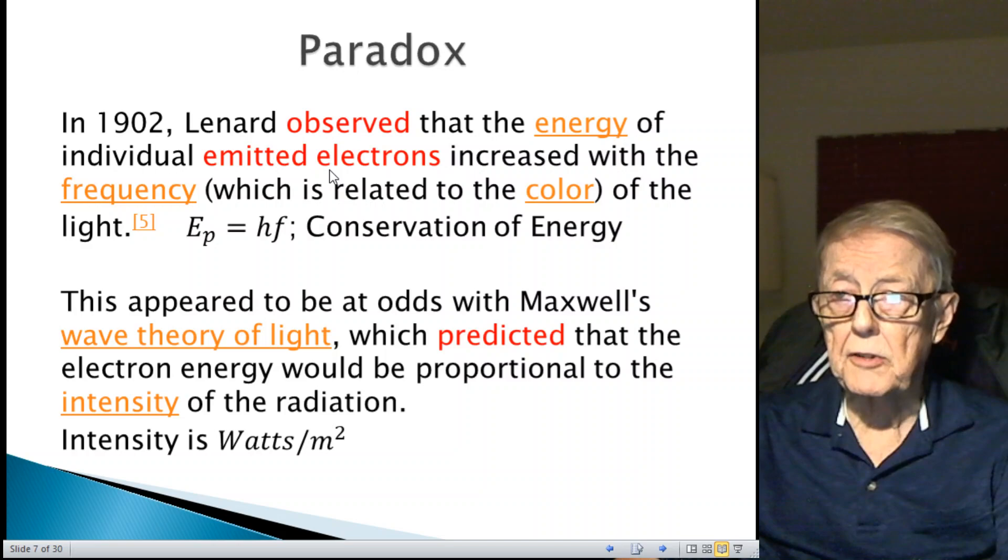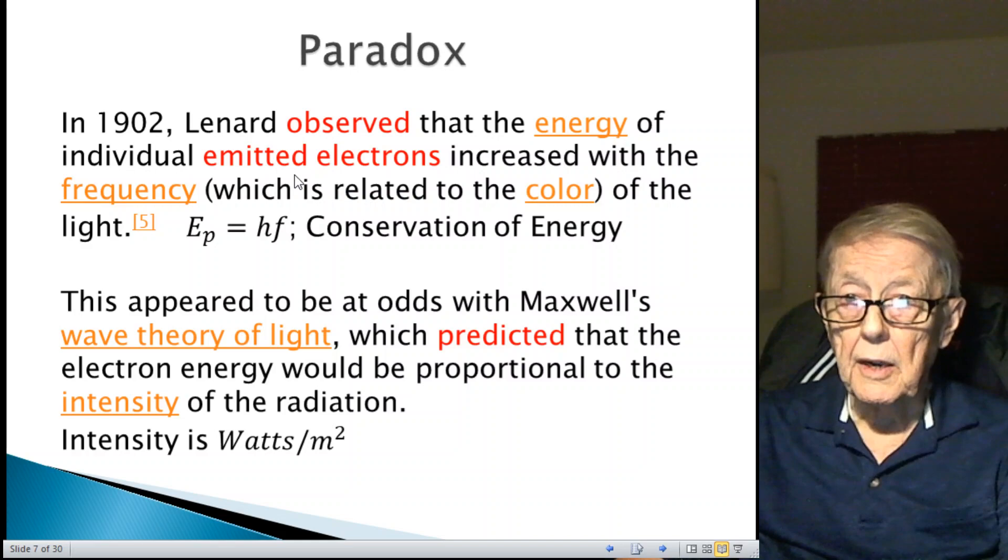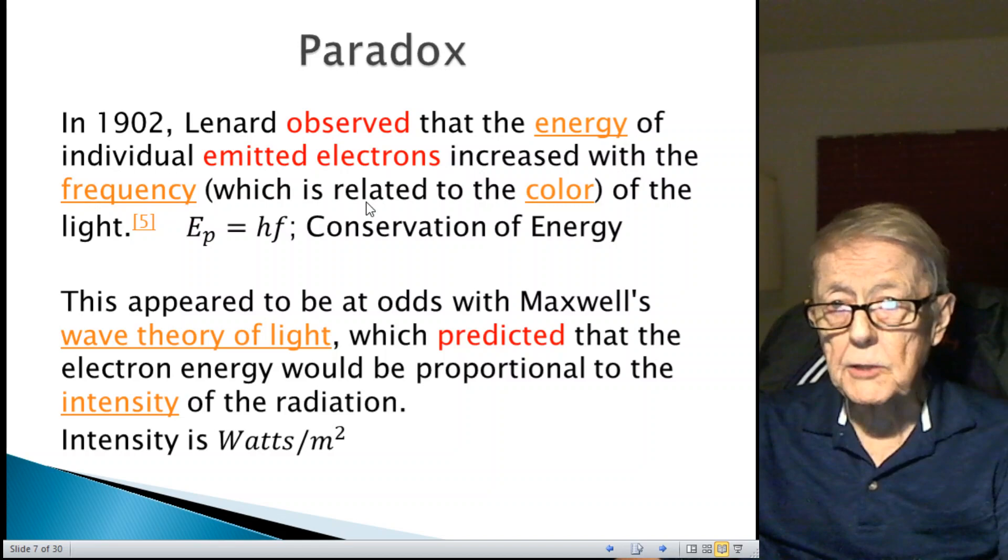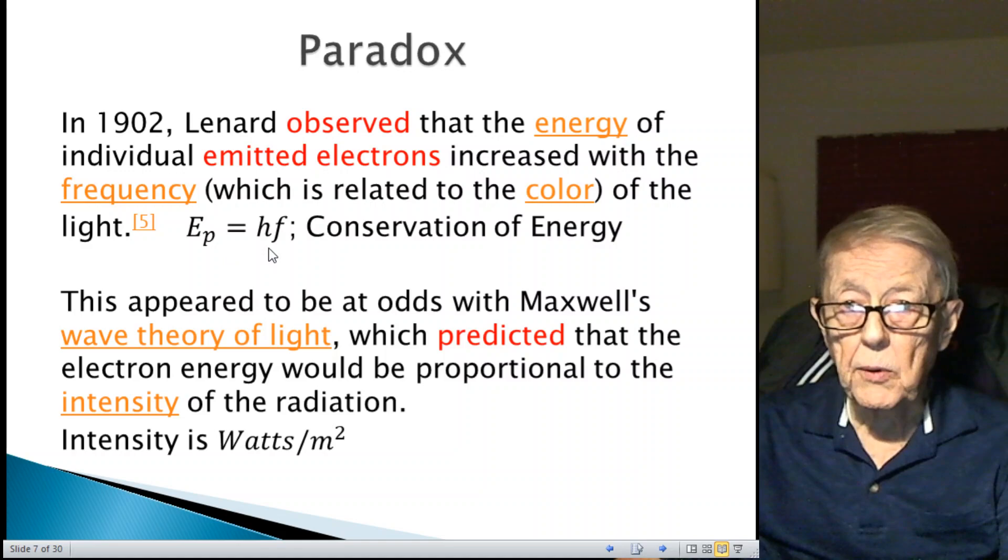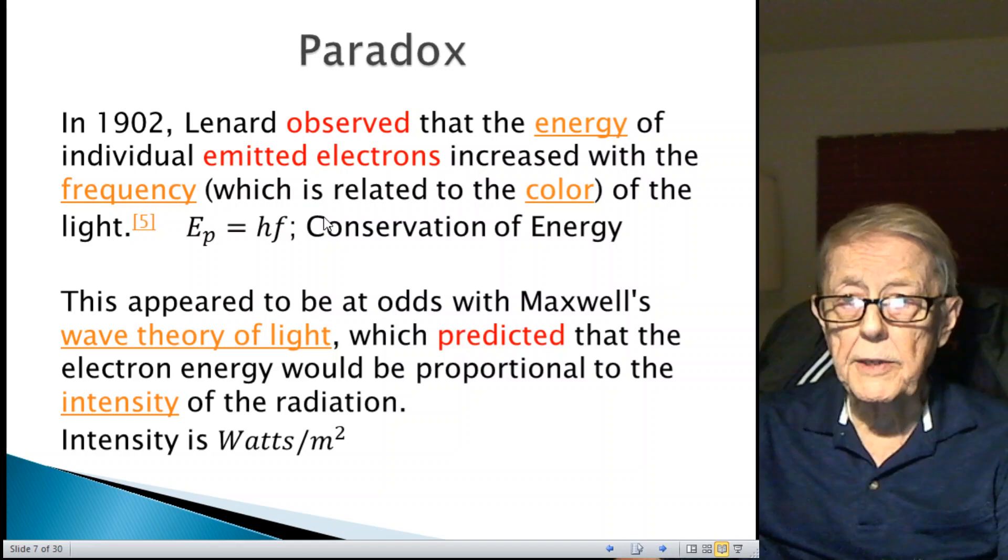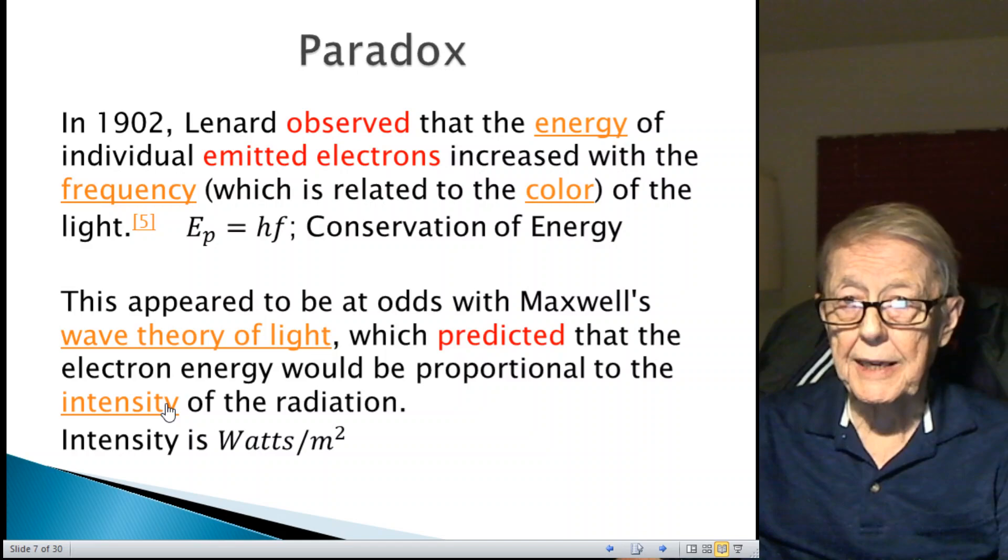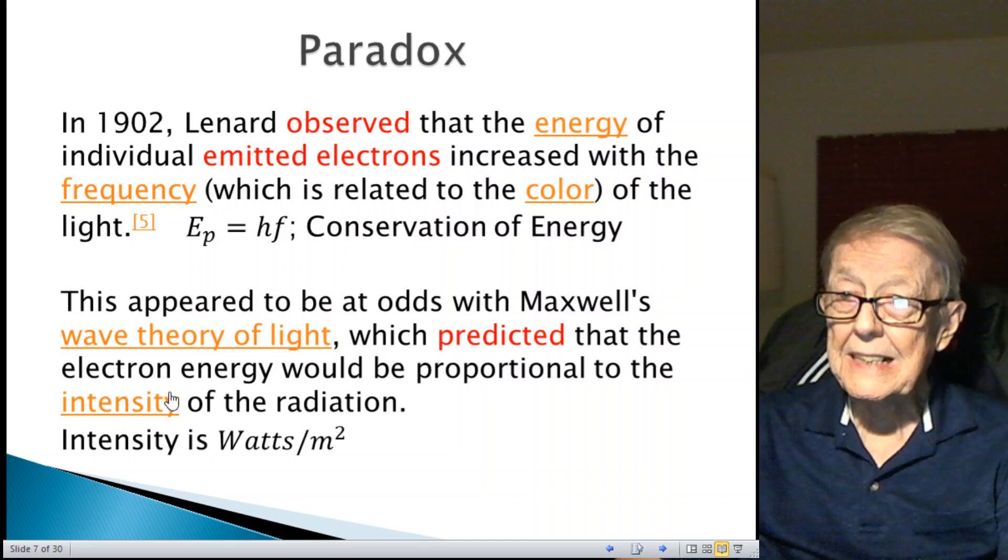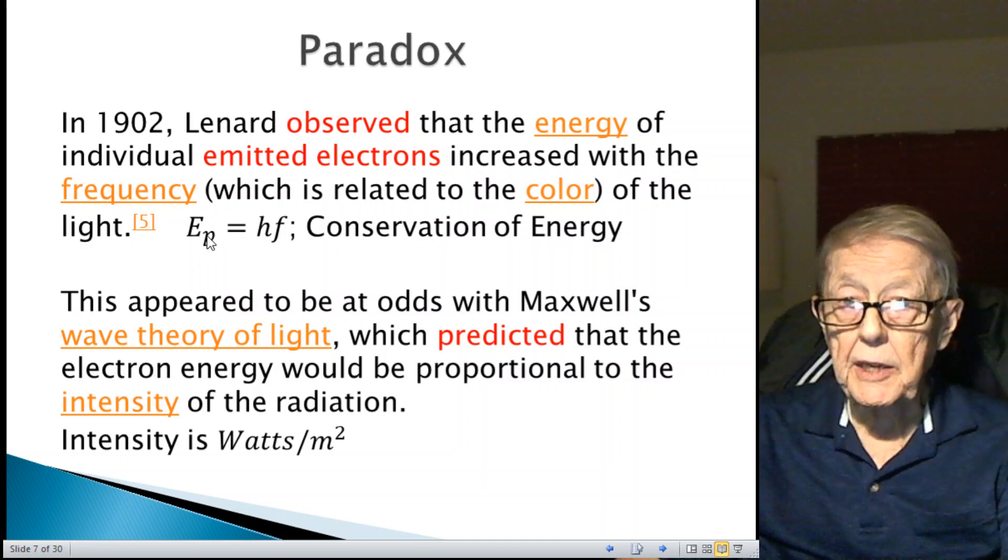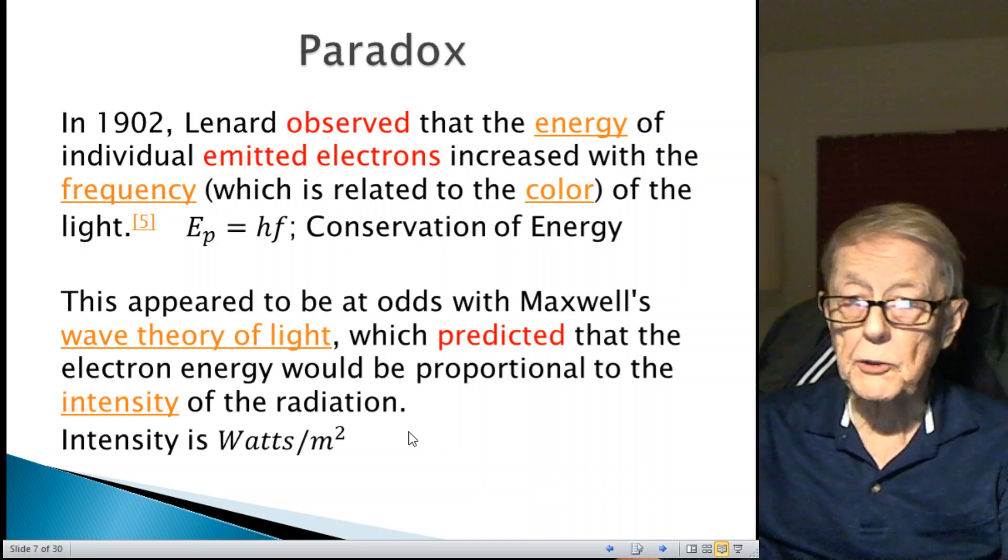This implies photons in and photons out, electromagnetic wave in and electromagnetic wave out. But he gets a lot of credit. Often it's called the Hertz effect. That was in 1887. Later in 1902, a gentleman named Leonard observed that the energy of the individual emitted electrons, how much energy that 1/2 mv squared, how much it increased with the frequency. And of course frequency is related to color of the light, and eventually this equation was developed. That seemed to be in contrast to what Maxwell predicted. Maxwell is very famous for his wave theory of light, and he predicted that the electron energy in this case would be proportionate to intensity.